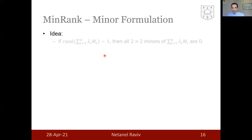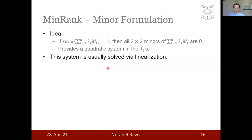In the minor formulation of the min-rank attack, we observe that if the rank of the target matrix is indeed one, it implies that all two by two minors, meaning all determinants of two by two matrices, should be zero. This provides, setting all the two by two minors to zero, provides a quadratic system in the lambda_i's. This system is usually solved via linearization, meaning every pair lambda_i, lambda_j is replaced by a single variable, z_ij. And then we build the resulting coefficient matrix, call it omega, which is now over F_q.